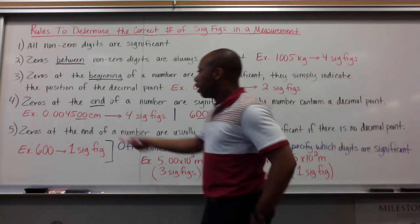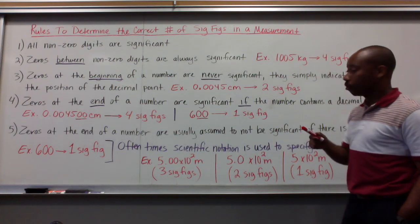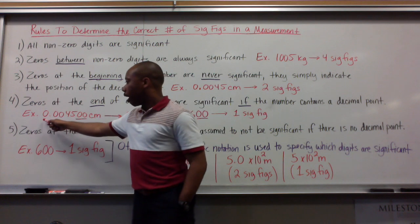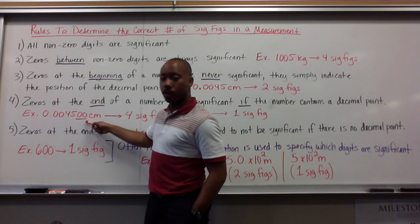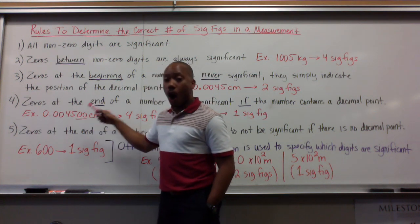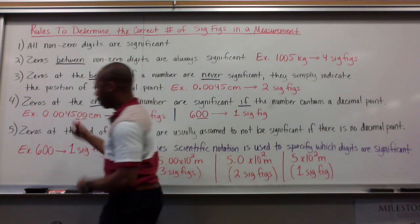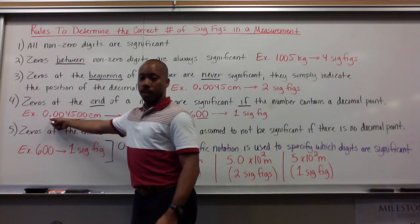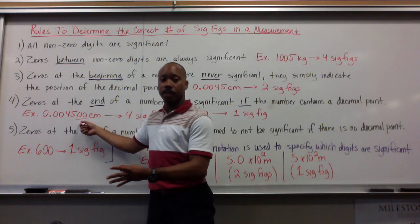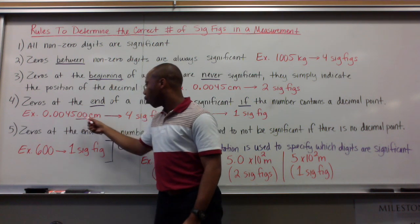Rule number four, zeros at the end of a number are significant if, it's conditional, the number contains a decimal point. For example, here, I have 0.004500 centimeters. These two zeros at the end of my number are significant because they come after a decimal point, which is here. If you can't see it on the video, that decimal point there. It's the same number, same values up here. I just have two more zeros indicating that it's precise out to this place there. So, I have one, two, three, four significant figures.